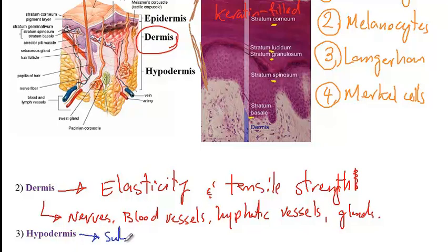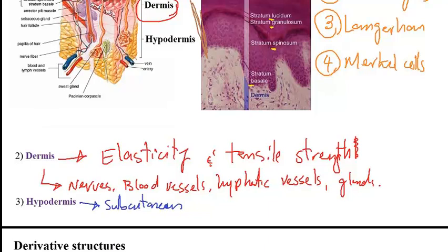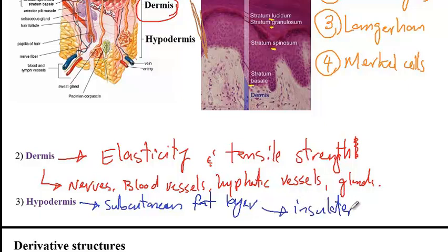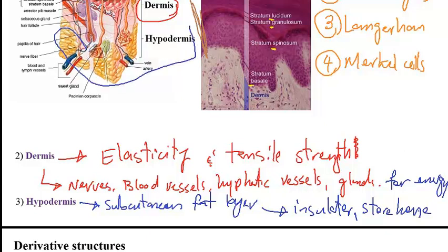Finally, we have the hypodermis layer, which is the subcutaneous fat layer. It acts as an insulator to help preserve heat and also serves as a storehouse for energy. The hypodermis contains many fat cells, shown in yellow in the diagram.